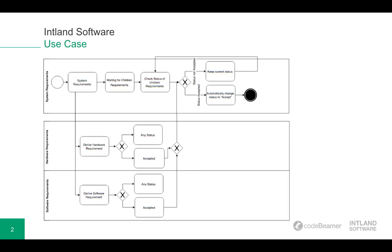When the status of the children requirements are on any other status like draft, review, or new, nothing shall happen and the status of the mother requirement remains the same. The system requirement has to check the status of the children requirements, and once the children requirements are not accepted yet the system requirement has to keep the current status. But once they are in the status accepted, the mother requirement shall be automatically changed to accepted as well. Basically, the status transition guard is a filter or condition in the form of a public tracker view which will be checked upon a transition execution and must be true in order for the status transition to proceed. You can fully customize the guard according to your needs.